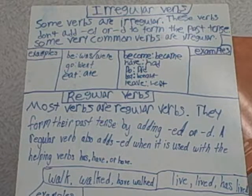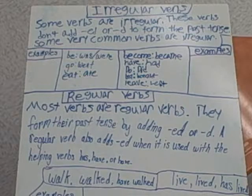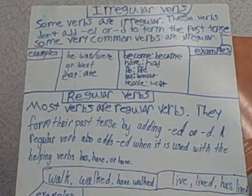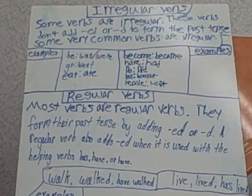Today we will be talking about irregular verbs and regular verbs. Some verbs are irregular. These verbs don't add -ed or -d to form the past tense. Some very common verbs are irregular.